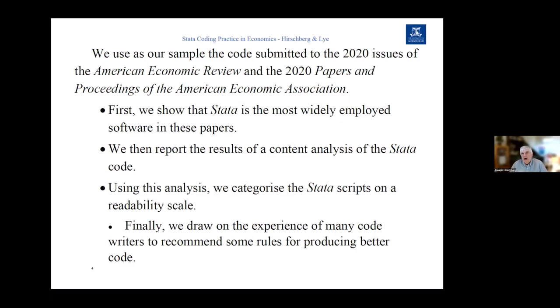In the past, the March issue of the American Economic Review was the Papers and Proceedings, but now they've separated it into its own publication. One difference between them is that Papers and Proceedings tend to be significantly shorter — often five to seven pages — whereas AER papers are often extremely lengthy, sometimes extending to 30 or 40 pages. There's a difference in the scale of research being reported.